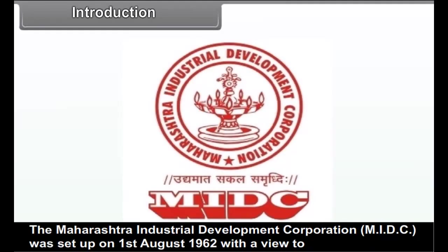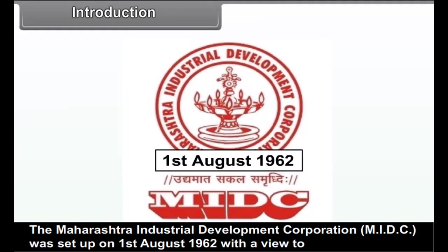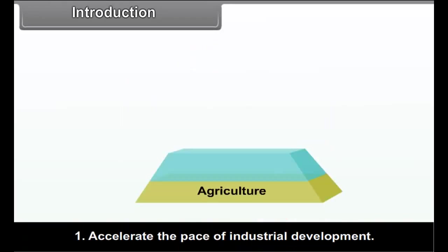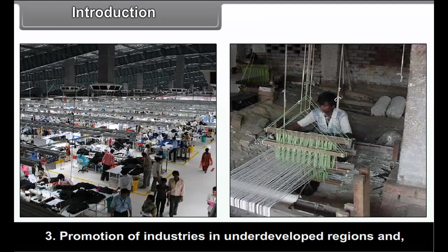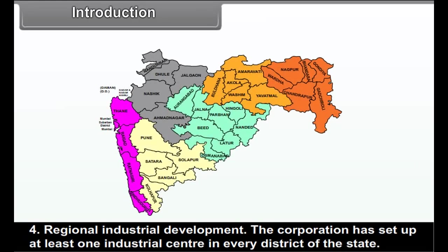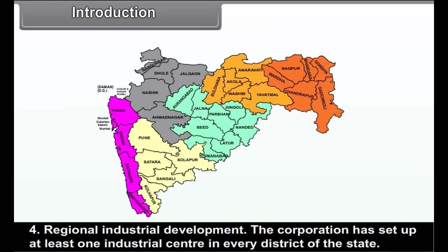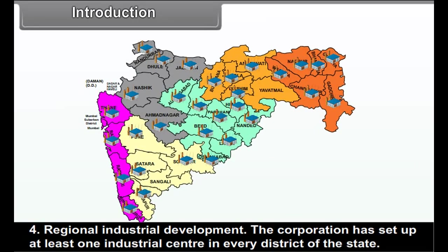The Maharashtra Industrial Development Corporation, MIDC, was set up on 1st August 1962 with a view to accelerate the pace of industrial development, provide infrastructural facilities, promotion of industries in underdeveloped regions and regional industrial development. The corporation has set up at least one industrial centre in every district of the state.